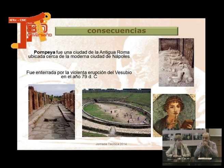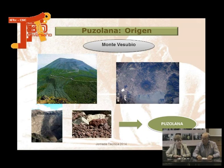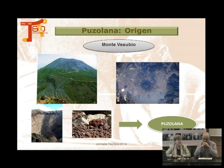¿Qué pasó en el Vesubio? Lo más conocido es que en el año 79 d.C. hubo una erupción muy importante y destruyó la ciudad de Pompeya. Nos quedan unos frescos, el circo romano, y los cadáveres que estaban cubiertos con una ceniza que expulsaba el volcán. En la erupción salieron unos materiales volcánicos, y los romanos, que eran muy listos, vieron que servían para hacer construcciones. Y entonces a eso se le llamó puzolana.